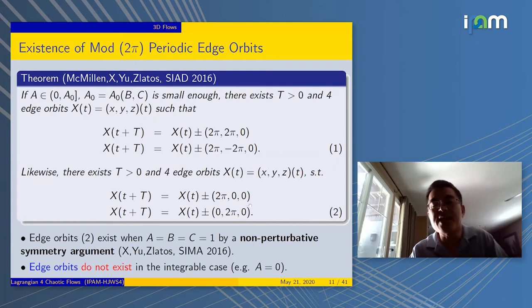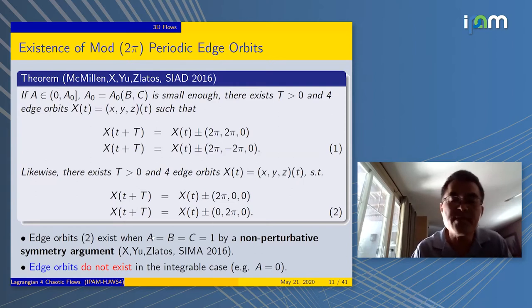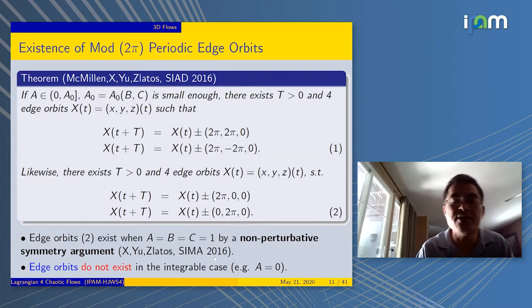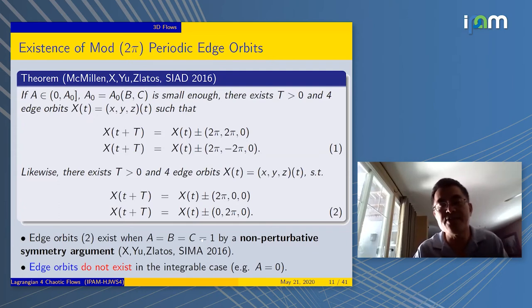The second trajectory, the unidirectional trajectory, can also be proved in the non-perturbative case when a, b, and c are all equal to 1. This is done by a non-perturbative symmetry argument three or four years ago with my colleague Yifeng Yu and Andrei Zlatoš. This is the only global result for ABC flow since the 1960s.